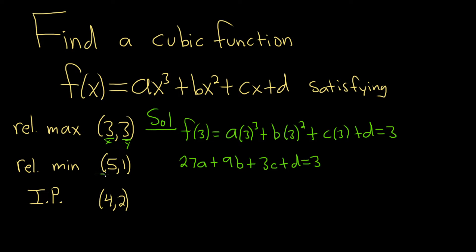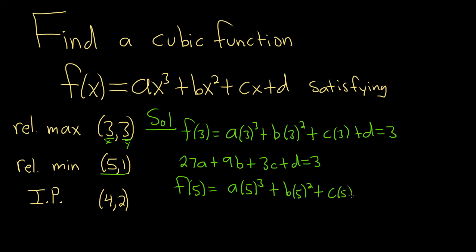We can do the same thing with the relative min. If you plug in 5, we should get 1. So f(5) = a(5³) + b(5²) + c(5) + d = 1. Rewriting: 5³ is 125, 5² is 25, so we have 125a + 25b + 5c + d = 1.